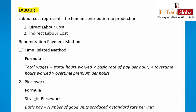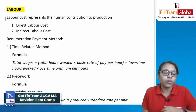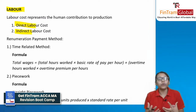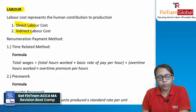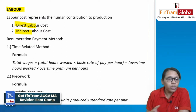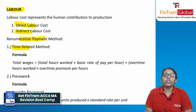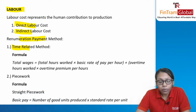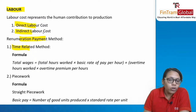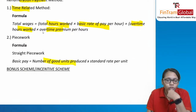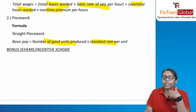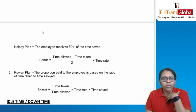Regarding labor: direct labor is engaged in the production activity; indirect labor works in administrative, R&D, or maintenance departments. Remuneration methods include time-related pay: total hours worked × basic rate of pay, plus overtime hours × overtime premium per hour. Piece work pay is based on: number of good units produced × standard rate per piece.